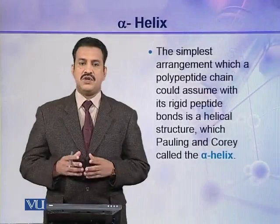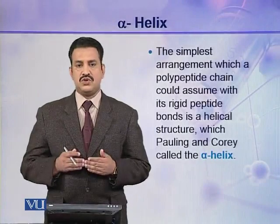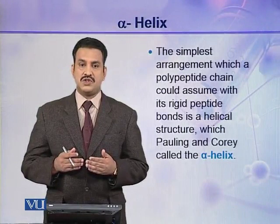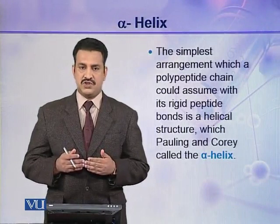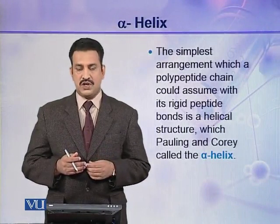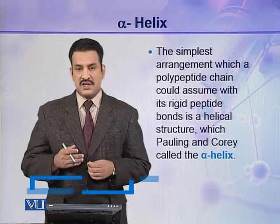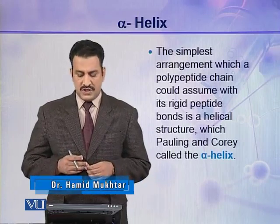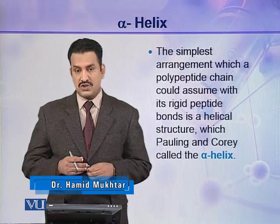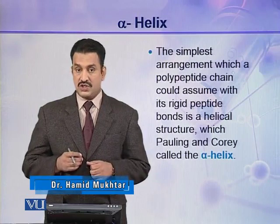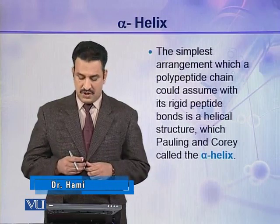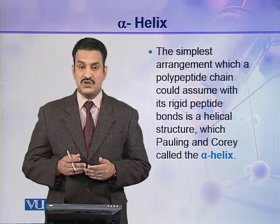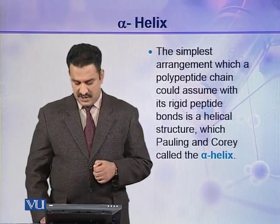After knowing the nature of peptide bond and the rotations which are allowed in a polypeptide chain, Pauling and Corey concluded that the simplest arrangement which a polypeptide chain could assume with its rigid peptide bond is a helical structure which they called alpha helix.